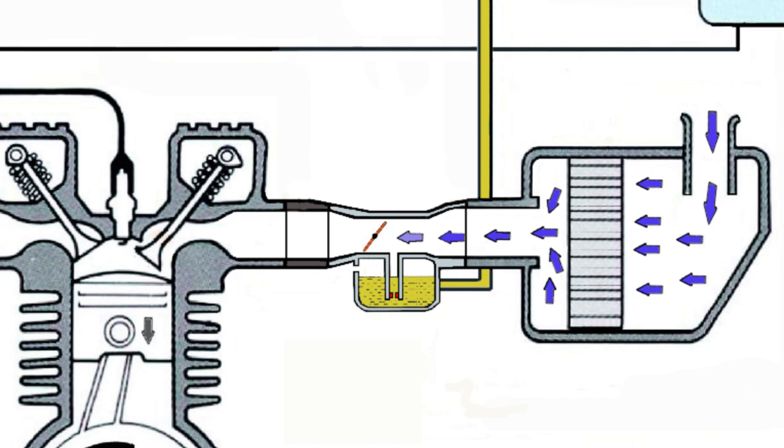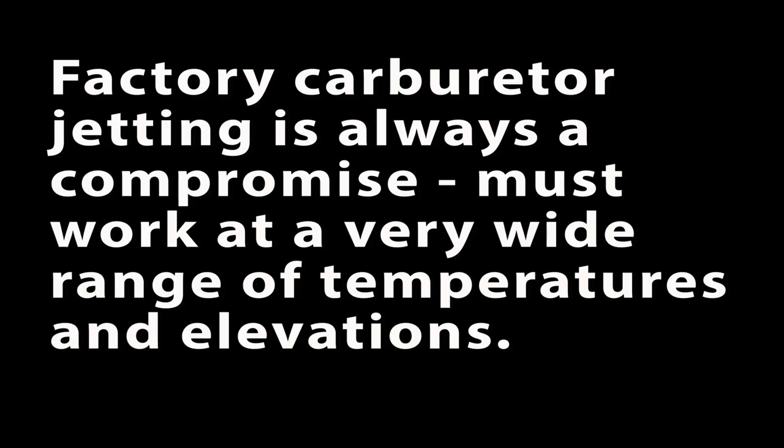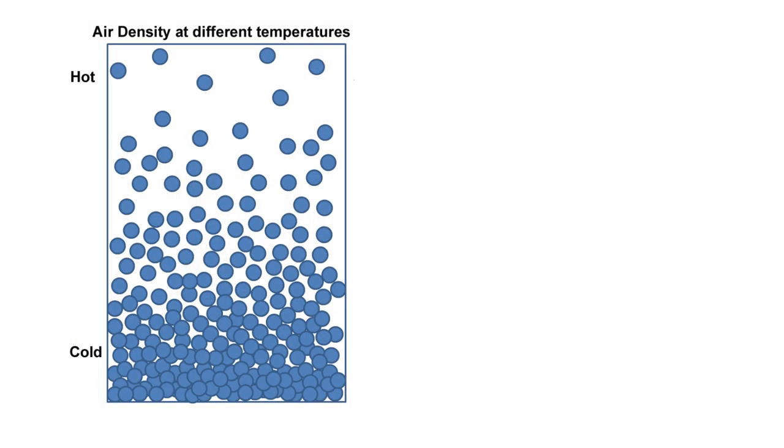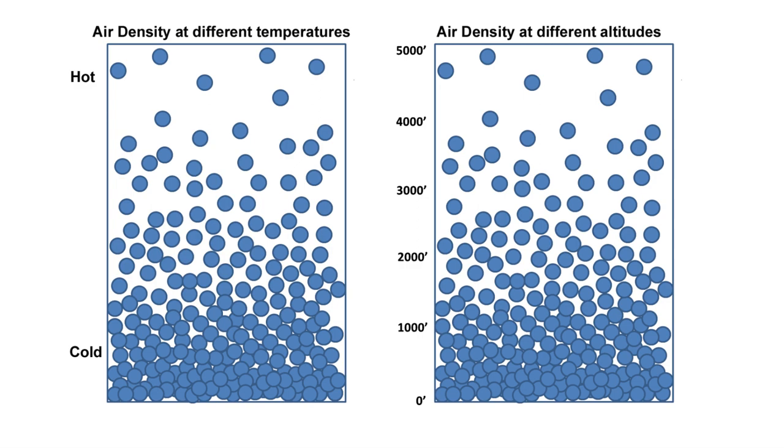The engineer designing an engine with a carburetor must determine the best possible size jets long before the customer ever turns a key or pulls a start rope. In most cases the engineer has no idea where their engine will be used so the jetting must be a compromise to allow the engine to run in a very wide range of temperatures and elevations, at the same time making sure the jetting is rich enough for the engine not to fail at the coldest anticipated air temperature or lowest altitude.